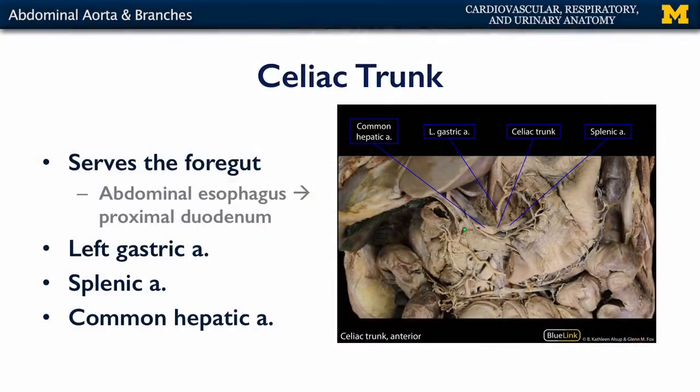The celiac trunk is one of the larger branches of the abdominal aorta. It serves the embryonic foregut and its derivatives: the abdominal esophagus (the distal portion of the esophagus), the stomach, and the proximal duodenum. There are three major branches of the celiac trunk: the left gastric, the splenic, and the common hepatic artery.